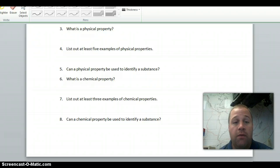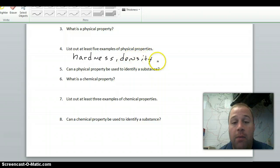For number three, what's a physical property? I'm going to try and not write out the whole thing just for time's sake. But a physical property is something that can be observed or measured without changing what the substance is. So listing out some examples of physical properties, these are in the notes as well, but you have things like hardness, density, color, specific heat, boiling point, melting point, conductivity.